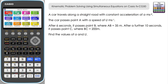We're going to set up two linear simultaneous equations using the kinematic equations of motion for constant acceleration, sometimes known as the SUVAT equations. The one we're going to use is S equals UT plus a half AT squared, and we're going to apply it to two different situations based on the information given in the question.